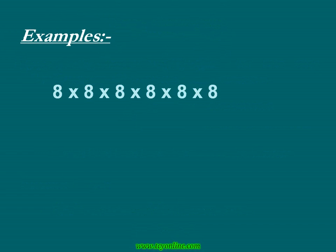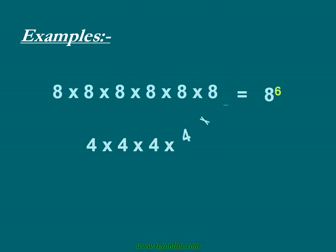Now see a few more examples. In the very first example, 8 is being multiplied by itself 6 times. So it can be represented in exponential form as 8 raised to the power 6, where 8 is the base and 6 is the exponent. Now look at the second example.